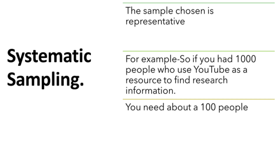So every tenth person — anyone sitting at number 10, 20, 30, 40, and so on up until you get to 100 — all of those people will be included in your study. That is a systematic way of choosing your sample.